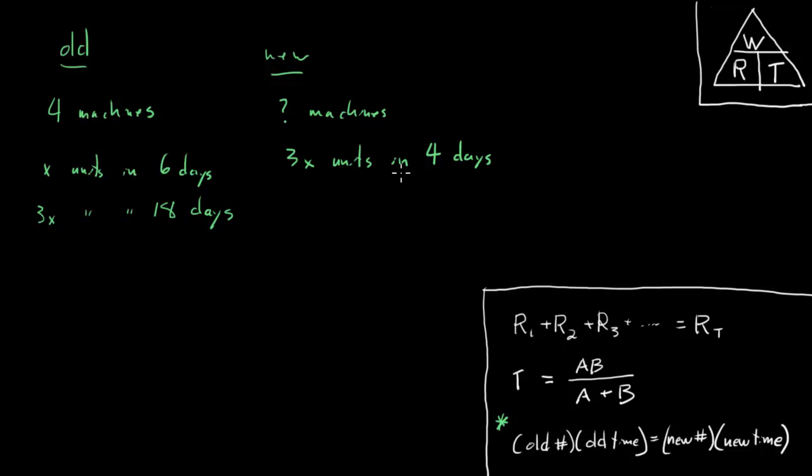And now we've got the exact situation that we want. They're doing the same amount of work and we've got time for both of them. So we're only really missing one piece. So we can go ahead and plug into our changing numbers of multiple machines formula. Let's see. Our old number of machines was four. And how long did it take them to do our job? Our job here being make three x units. Well it took them 18 days.